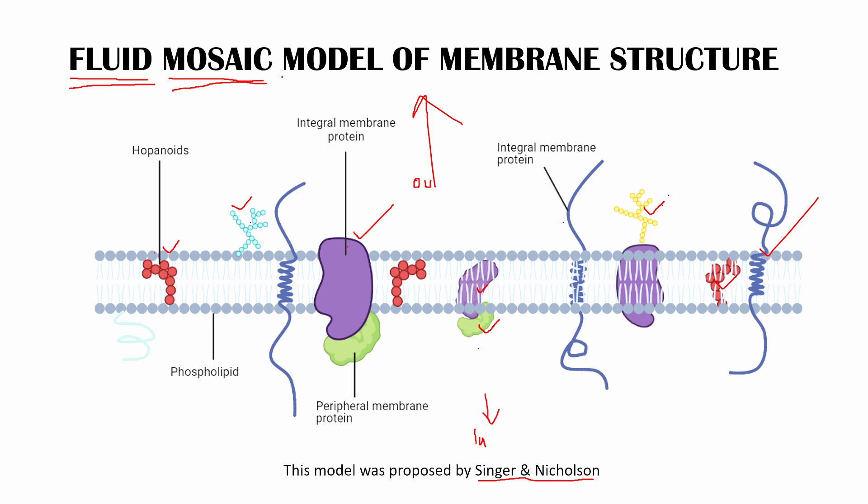Why mosaic? Because it has various types of components. Why fluid? Because all the components a plasma membrane is having, they are constantly moving. Now a common question you can get asked from this particular topic is who proposed the fluid mosaic model. It is Singer and Nicholson.